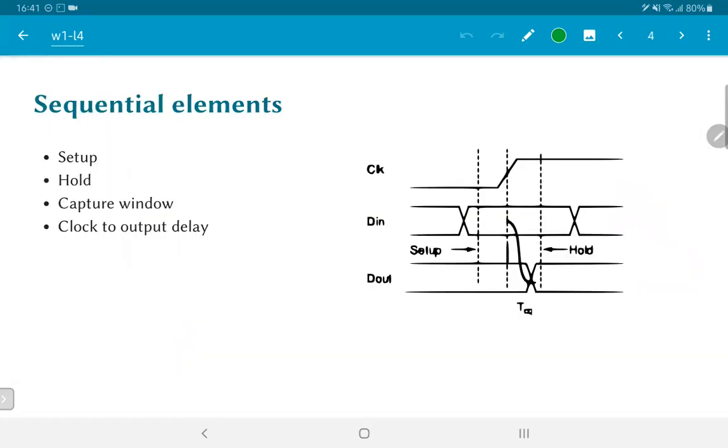Now what about sequential elements? Sequential elements also have some form of delay, but the most important parameters over here are not the straightforward propagation delay through the circuit, although that is also one of the delays which is usually called clock to output delay. The clock to output delay basically says that after the clock edge has arrived, it takes a certain amount of time before the D out has stabilized to its output value.